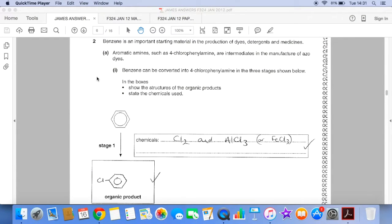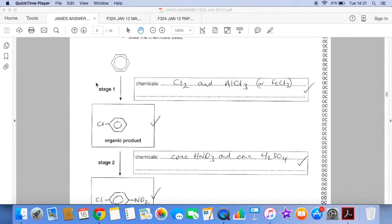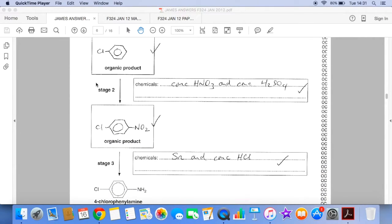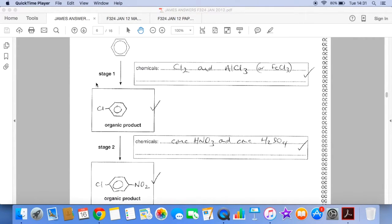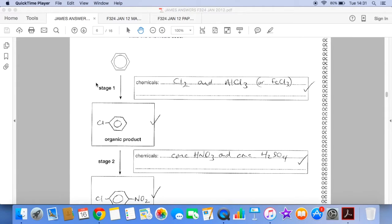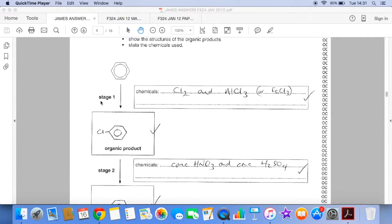So the way I've chosen to do this synthetic route is I've put the chlorine on first and then I've dealt with putting the amino group on. So you can do it the other way around, but I've gone for the chlorine first. So to put a chlorine onto the benzene ring, I would need chlorine and AlCl3 or FeCl3. You can see there's a mark for each of those.